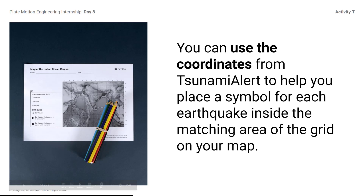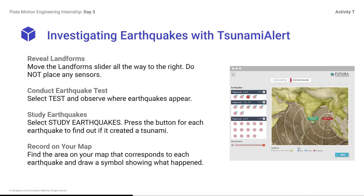You will now record the earthquake data directly on your personal copies of the map of the Indian Ocean region for final reference. You can use any colored pencil or a pen to mark the earthquakes, as long as the marks are easily visible on the map. You do not have to record the locations precisely. Investigating earthquakes with Tsunami Alert: reveal landforms by moving the landform slider all the way to the right. Do not place any sensors. Conduct earthquake test by selecting Test and observing where earthquakes appear. Select Study Earthquakes and press the button for each earthquake to find out if it created a tsunami. Record on your map — find the area on your map that corresponds to each earthquake and draw a symbol showing what happened. Students, navigate to Tsunami Alert and study the earthquakes. Use the Design Tool button in the upper right corner of the Futura Workspace tab. Finish recording your earthquake and tsunami data.